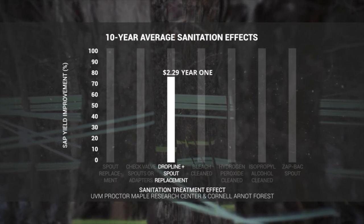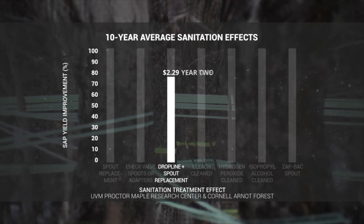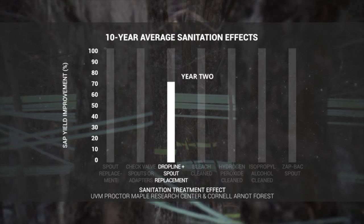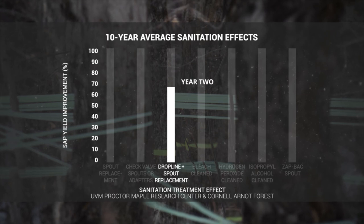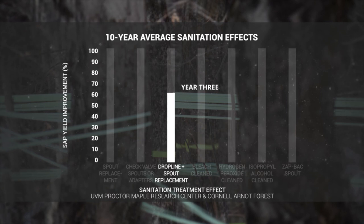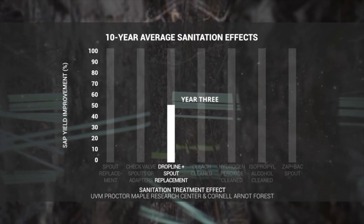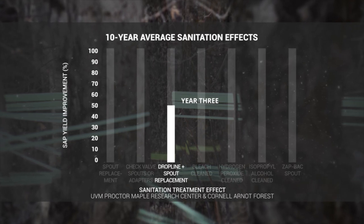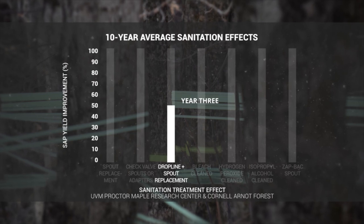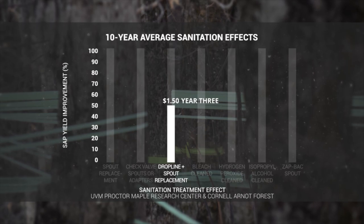Drop line replacement is done at periodic intervals — every three years typically yields the best results. In the first year following drop line replacement, only the spouts need to be replaced. Yield will drop somewhat, but costs are minimal. In the second year after drop line replacement, the spouts are replaced again, resulting in another modest drop in yield. In total, sap yields over the three-year period average about 50% over no replacement or cleaning, with an average net profit of about $1.50 per tap.